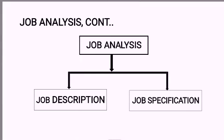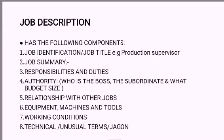Once you have conducted a job analysis, you are supposed to come up with two documents. One document contains what is called the job description — this is basically a description of the job itself. The other document, the job specification, describes the person who is qualified to do the job — what the person has in terms of qualification, experience, and so forth.